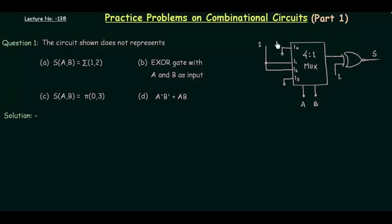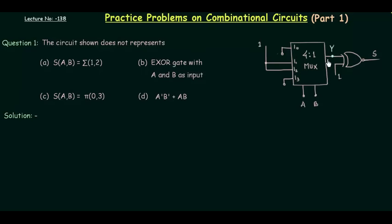In this question, you can see a circuit on the right-hand side of your screen. We have to find out the Boolean expression for s, and then check from the given options which one is not s. You can see there is a 4-to-1 mux. So the first thing we have to do is analyze this multiplexer. I will call the output of the multiplexer y. Our first step is to find the value of y, and then we can find the value of s.